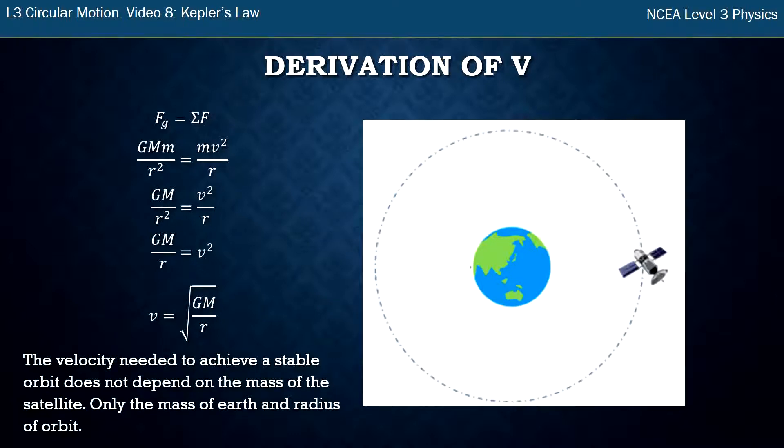Notice it doesn't depend on the mass of the satellite, only on the mass of the earth and the radius of the orbit. NASA scientists have to do this calculation to figure out what velocity they need for a satellite at a certain height to be in a stable orbit.